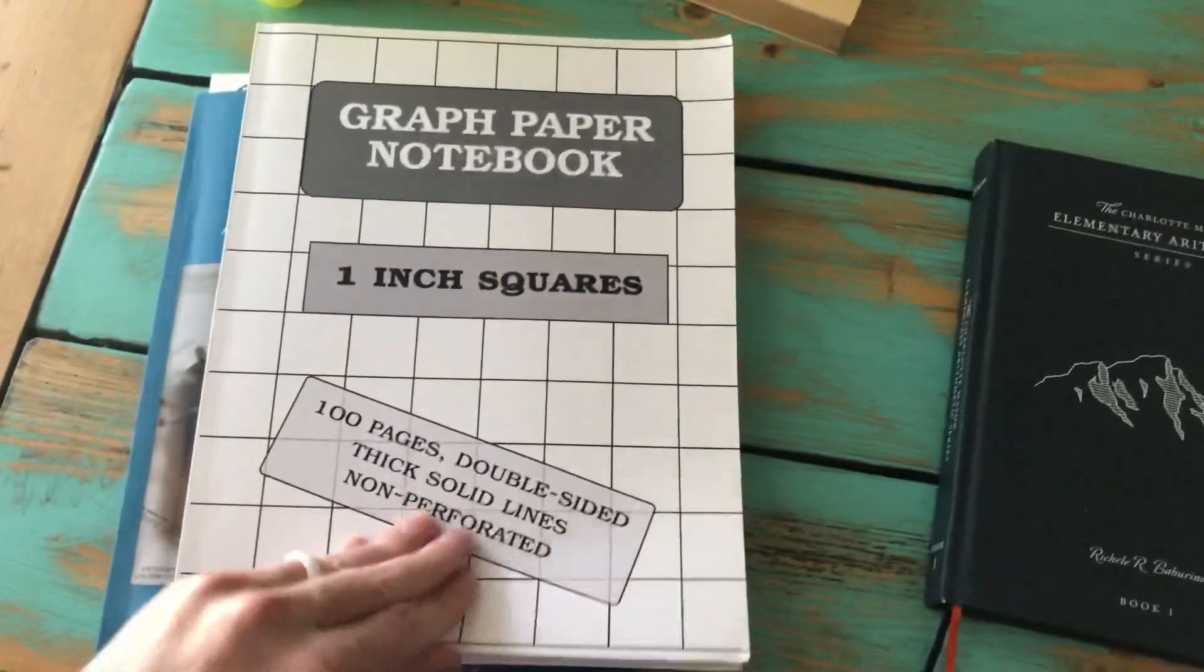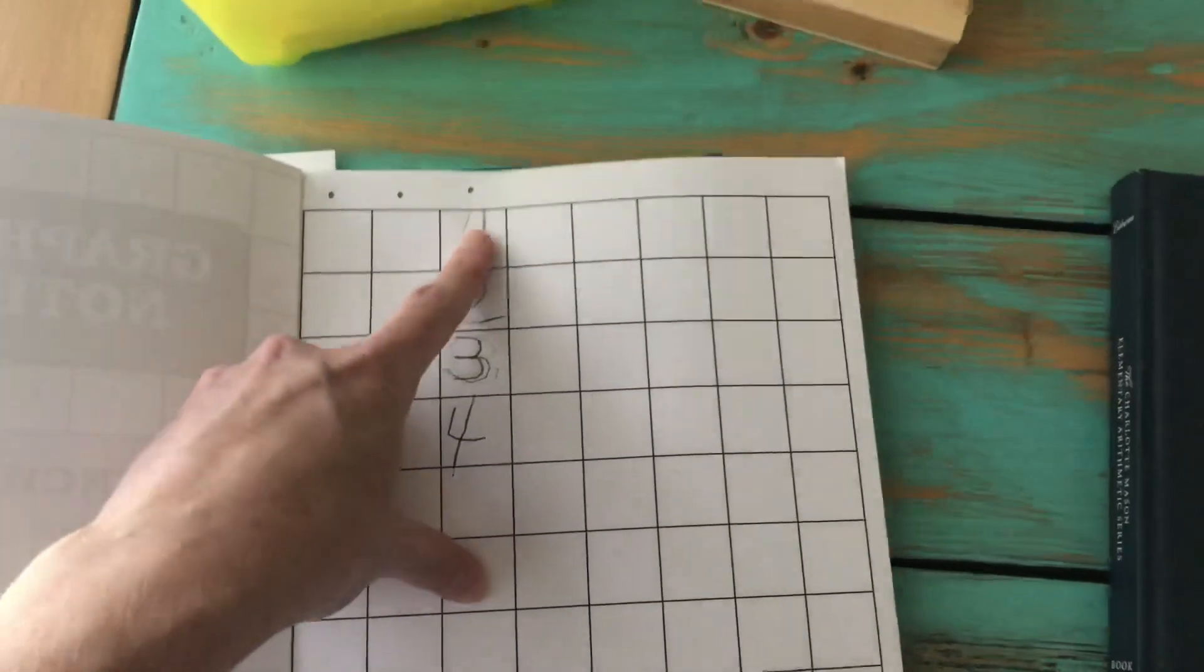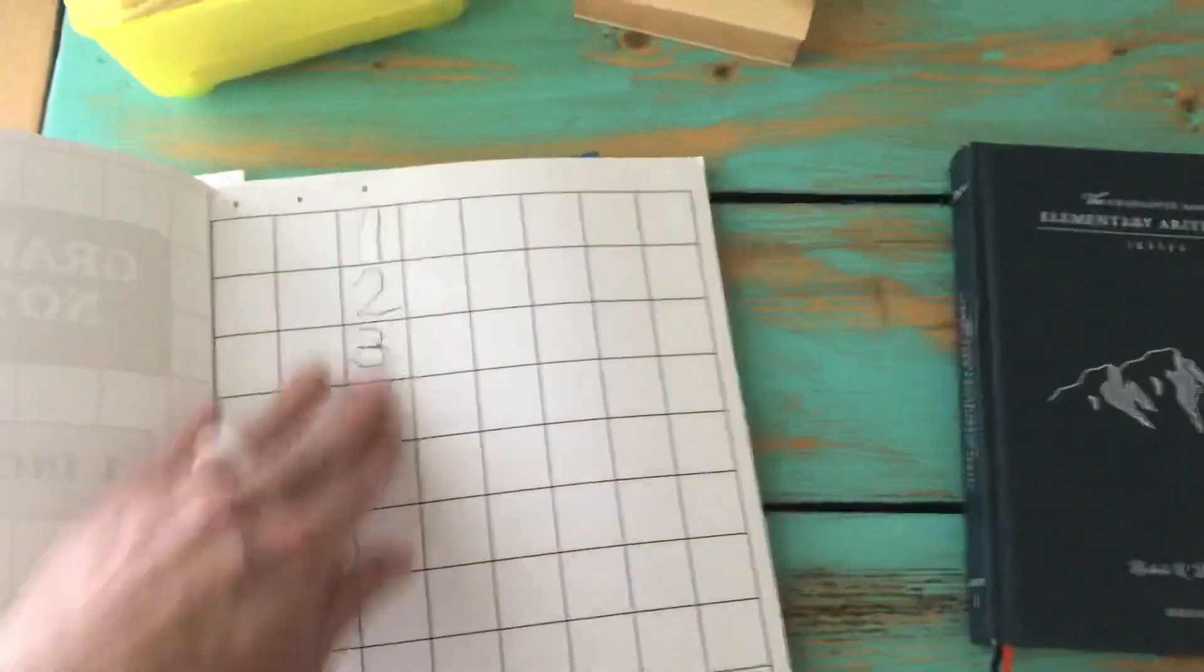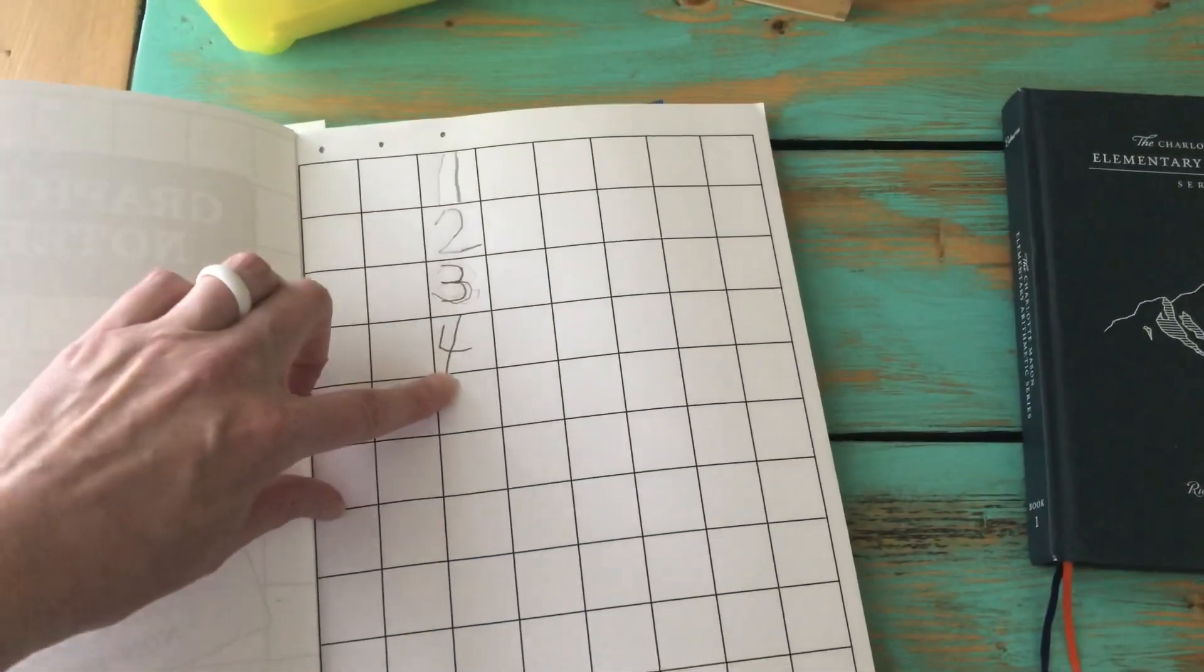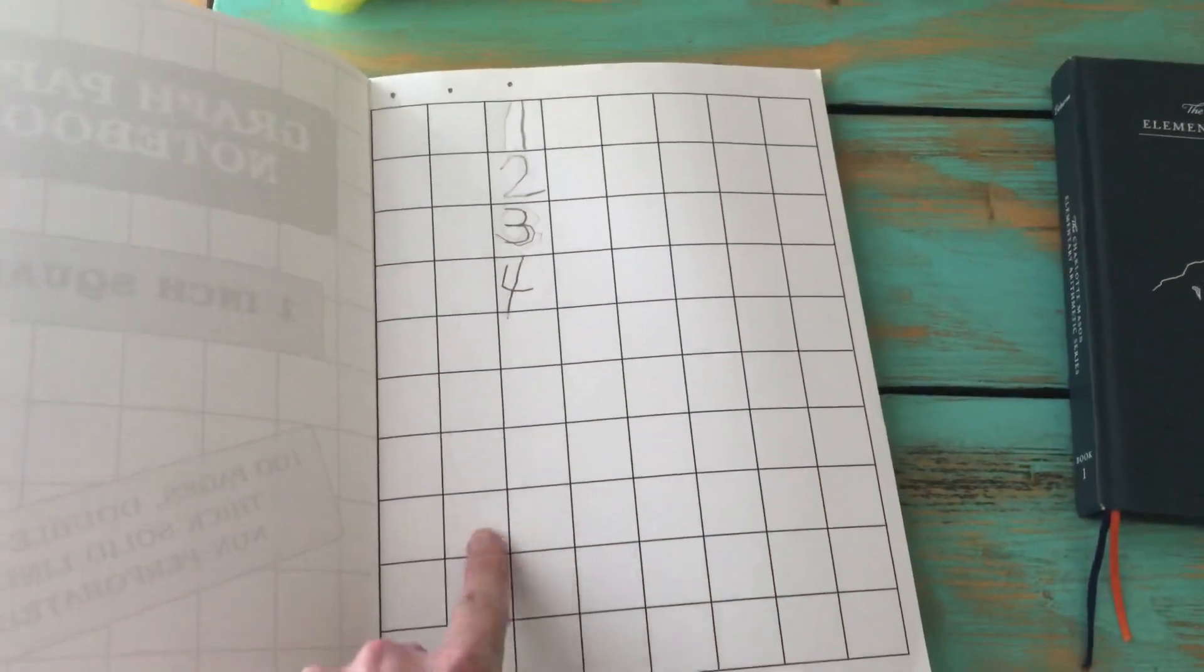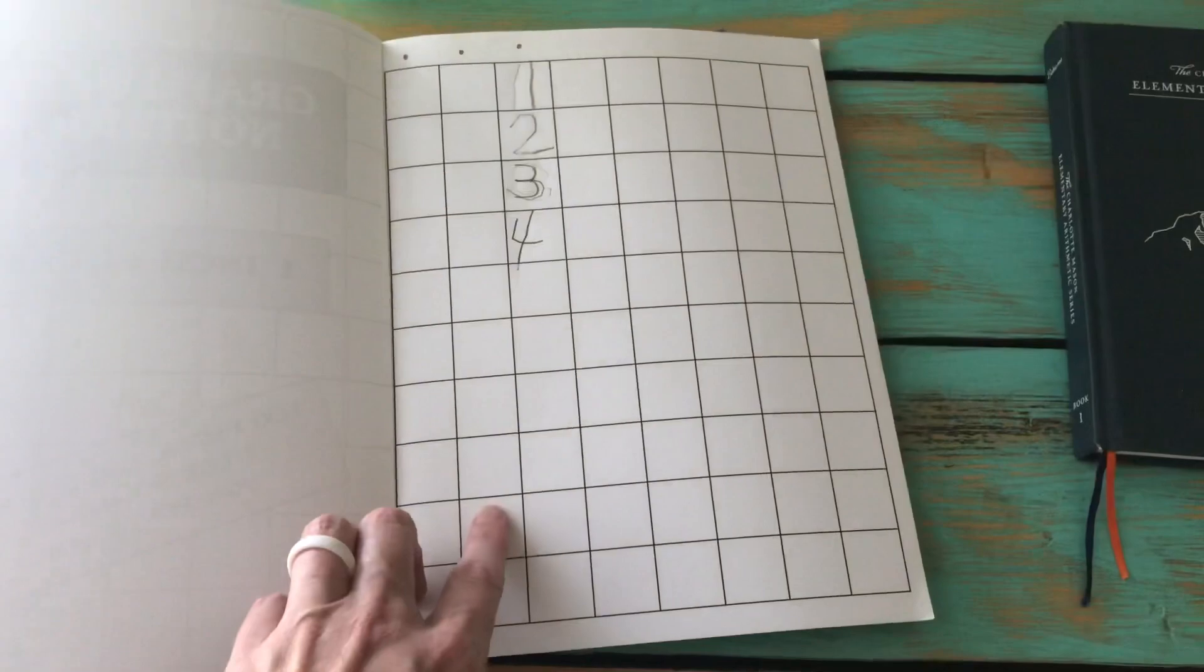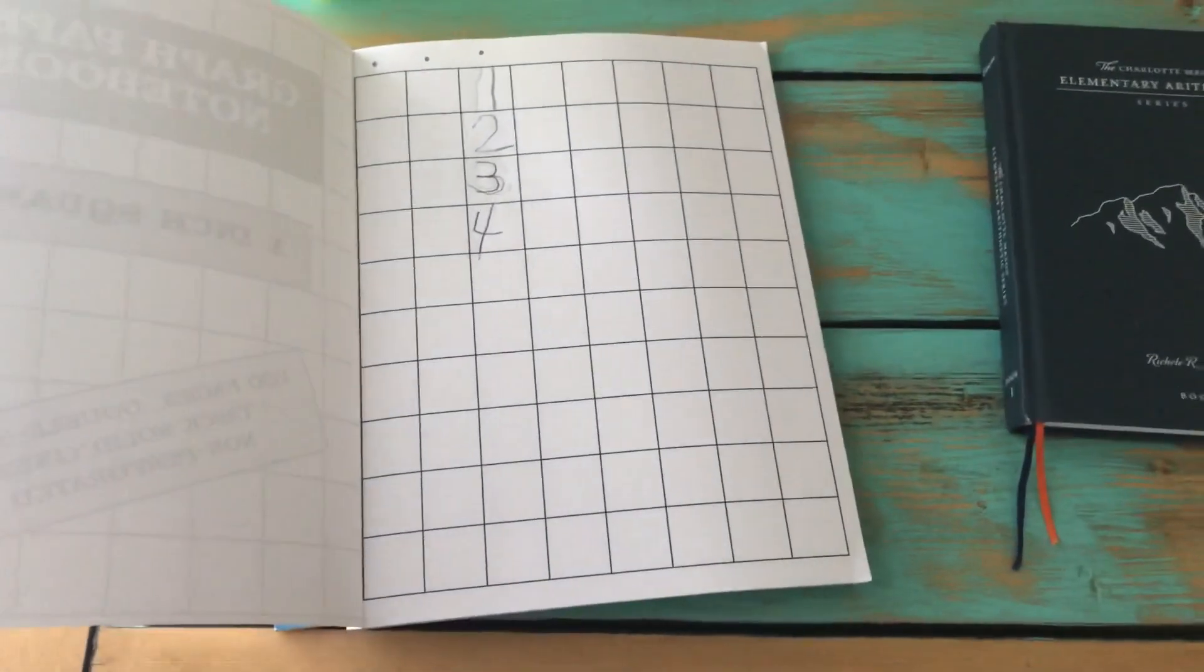Let me show you his notebook. I got this on Amazon. We got to the number four. I showed him he's going to go three spaces over. Each time he just writes the number we're currently exploring, and by the time he gets to 10, he'll put the one here and the zero here for 10.